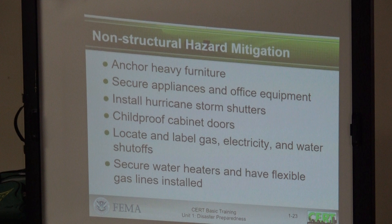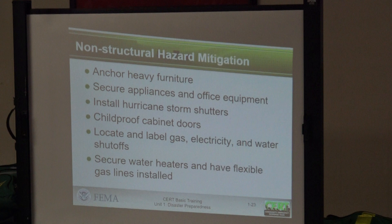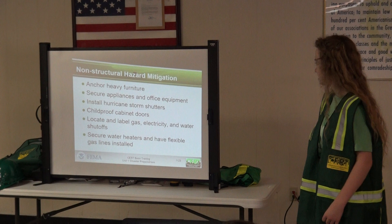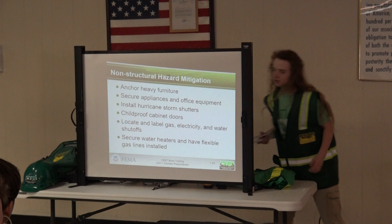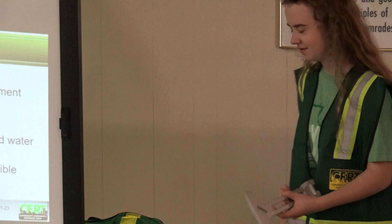Non-structural hazard mitigation: anchor heavy furniture, secure appliances and office equipment, shut down for hurricanes especially if you're in a hurricane-prone area, child-proof cabinet doors, and locate and label gas, electricity, and water shut-offs. A good tool to have in an emergency can be used to shut off your gas and water, pry open doors, break windows, and cut through tall grass if needed.